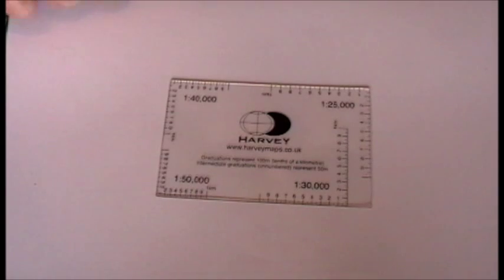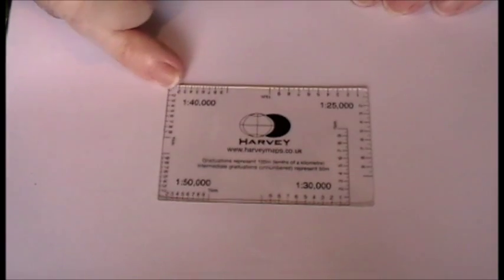I'll show you another one - this one is a Harvey. It's a nice little compact one that doesn't have distance scales on it. I should say, all this one's got is just the scales itself.